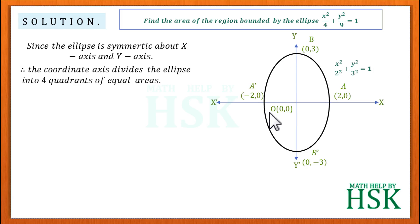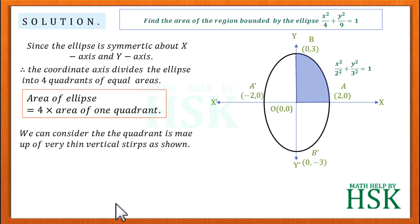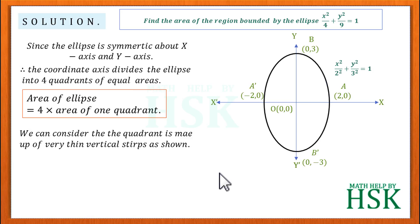To calculate the area of the complete ellipse, we calculate the area of one quadrant and multiply by 4. So, area of the ellipse = 4 × (area of one quadrant). We shade the first quadrant and divide it into vertical strips. Adding the areas of all these vertical strips gives the area of the first quadrant.